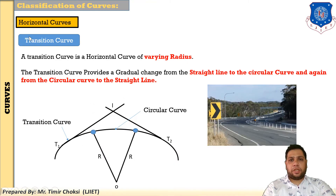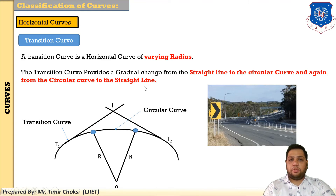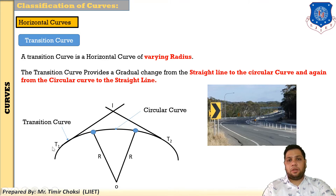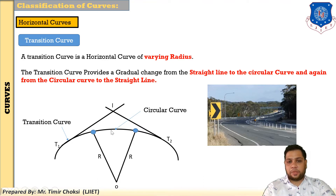Next is the transition curve. This has the most important use in highway construction. A transition curve is a horizontal curve of varying radius. It provides a gradual change from a straight line to a circular curve, and again from the circular curve back to a straight line. So where a gradual change is provided from straight to circular and circular to straight, this type of curve is called a transition curve.